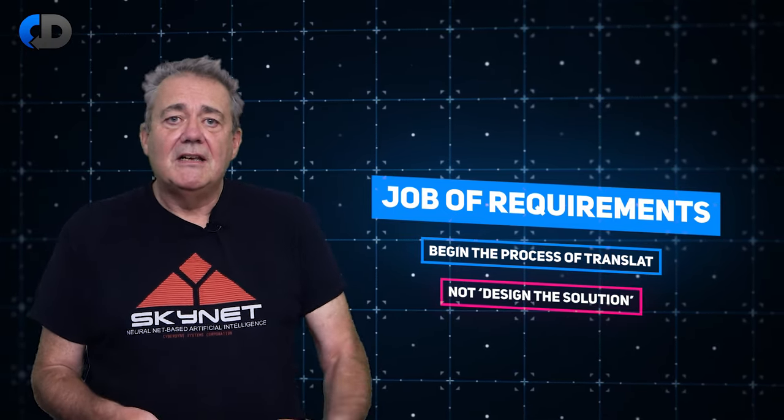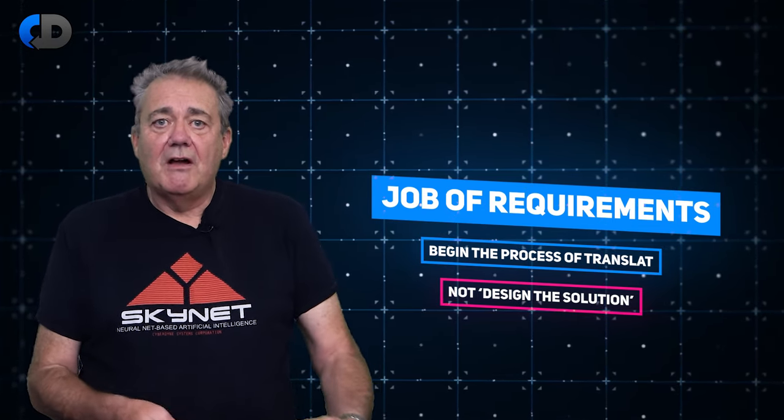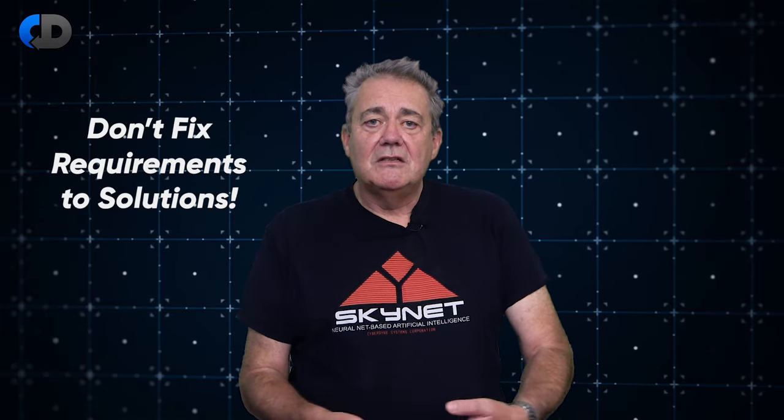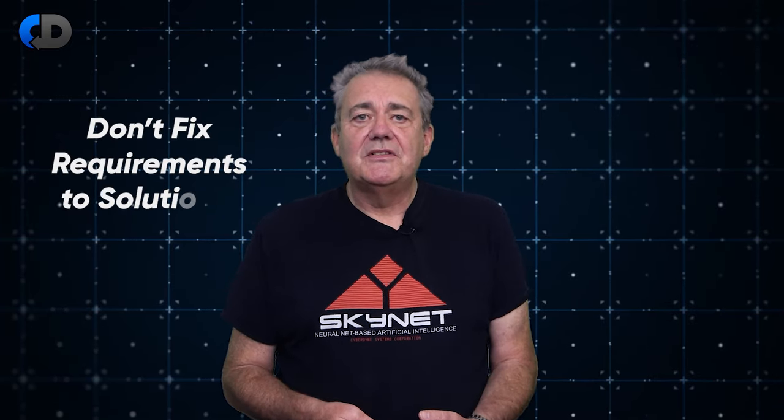The job of the requirements process is to begin this translation from a vague wish into something that works on a computer — not by attempting to solve it in a single step, but first making sure that we're clear about what users want as far as we and they understand it. Our job is to explore the problems we are trying to solve and leave ourselves free to try out different solutions. This means it's a terrible idea to fall into the trap of rigidly fixing the requirements process to the solution. These should be treated as two distinctly separate steps: we separate what the system needs to do from how it actually does it.